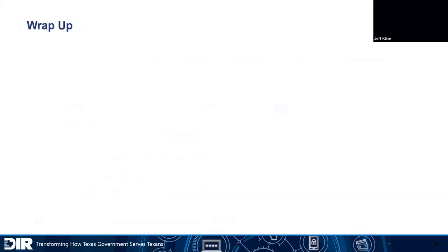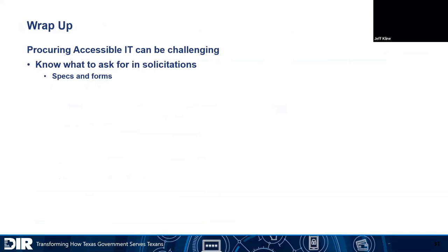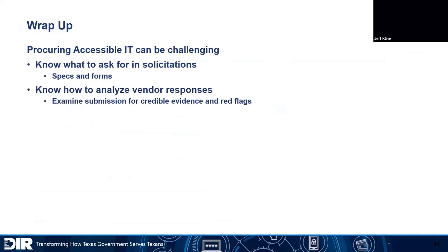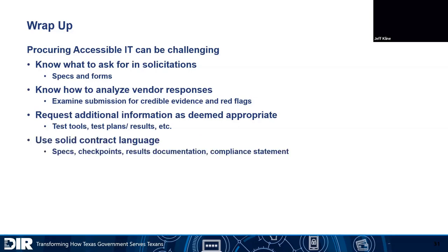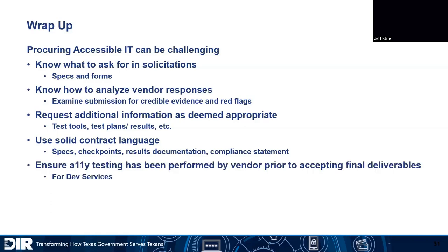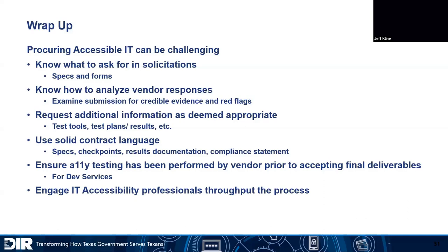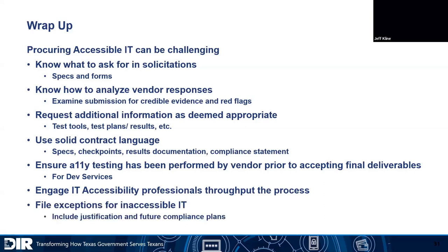Let me just wrap up. Procuring accessible IT can be challenging. Know what to ask for in solicitations — what specs, what forms to use. Know how to analyze vendor responses. Examine for credible evidence, red flags. Request additional information as deemed appropriate — test tools, test plans, results. Use solid contract language: specifications, checkpoints, et cetera — and even a compliance statement at the end if it's a development contract. Ensure accessibility testing has been performed by vendor prior to accepting final deliverables — that's really important for development services. Engage accessibility professionals throughout the process. And file exceptions for inaccessible IT, and include justification and future compliance plans.